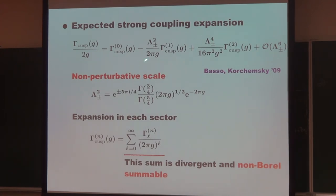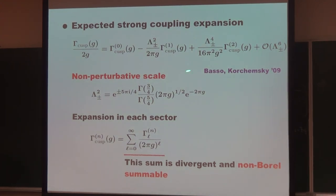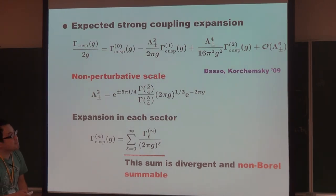The strong coupling expansion is expected to take the following form, as already proposed. There is a perturbative series in 1 over G, and there are additional non-perturbative sectors. There are two choices of lateral summation contour, corresponding to different resummation prescriptions. Each sector has a 1 over G expansion with coefficients gamma 0, gamma 1, gamma 2, and so on.